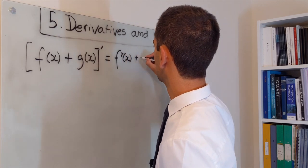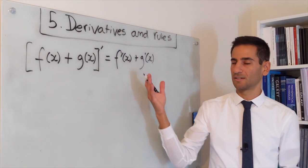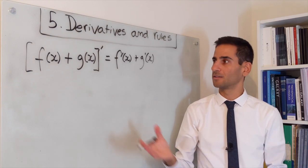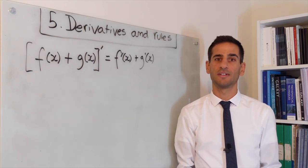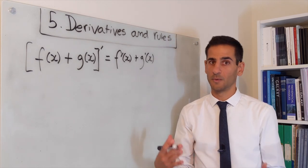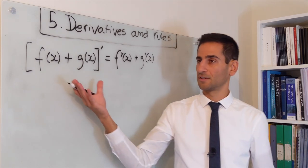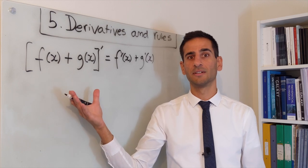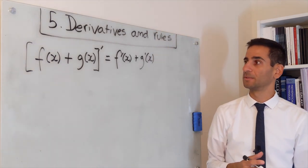That's correct. We'll see that this is the case because derivatives essentially share the properties of limits. You should remember that for limits there is a very similar property, that the limit of the sum is the sum of the limits.